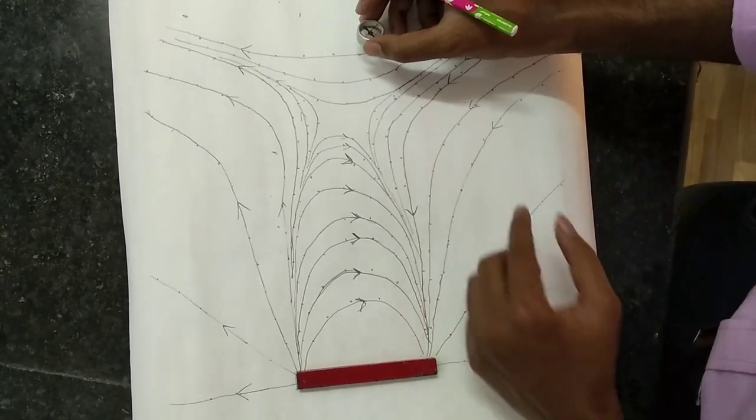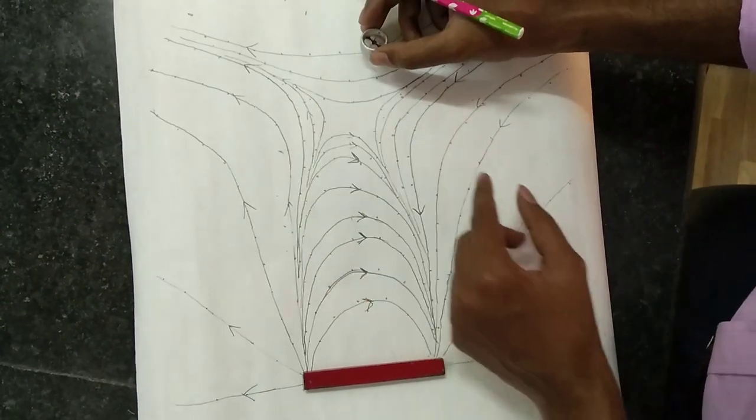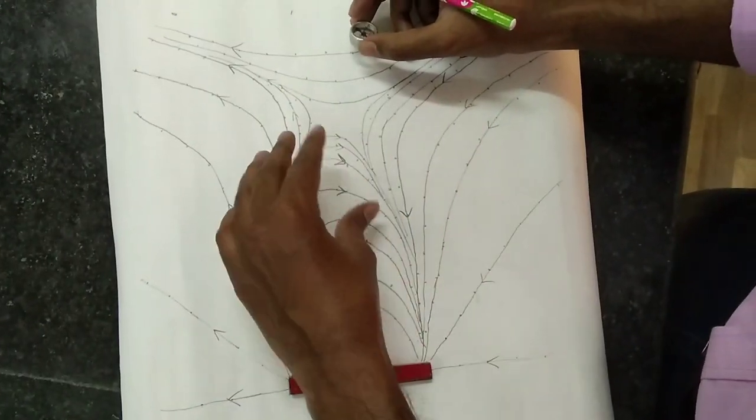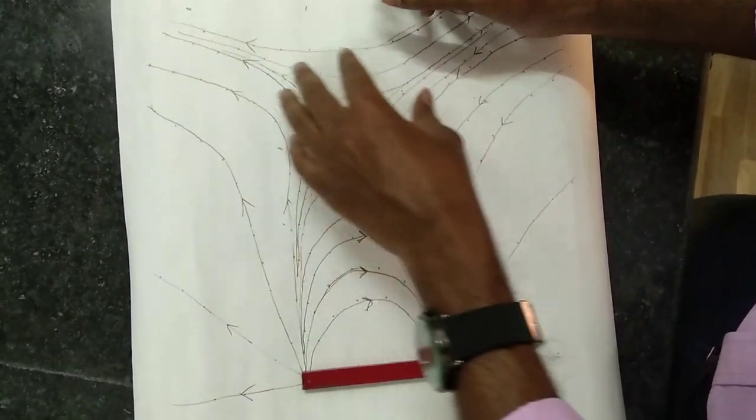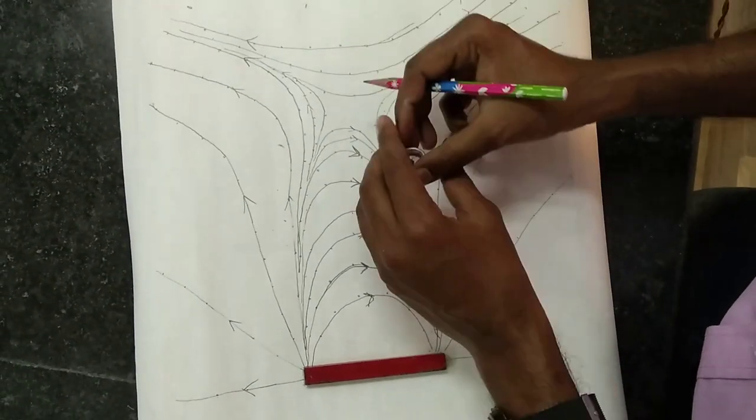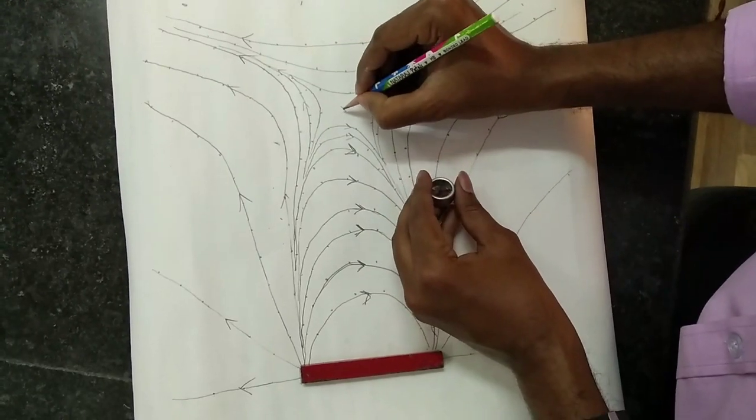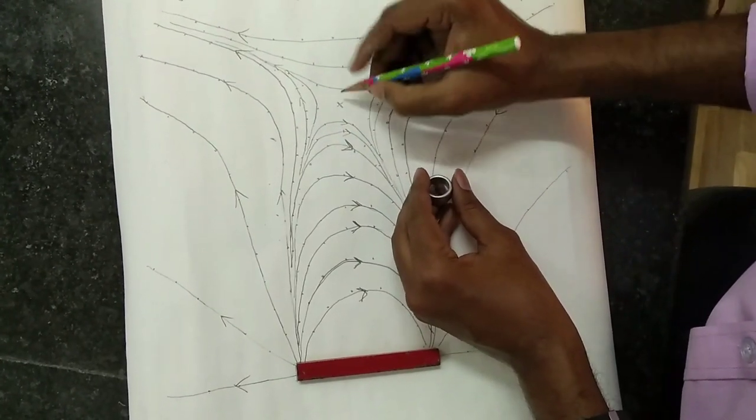So after the completion of all the lines I could notice that there is a point existing in between the field lines of magnetic field and also the field lines due to the horizontal intensity of earth. I can easily say that this portion is the neutral point.